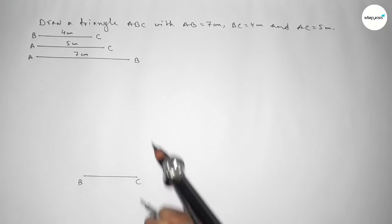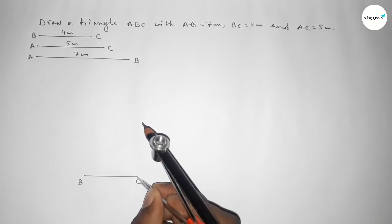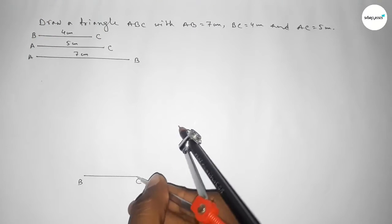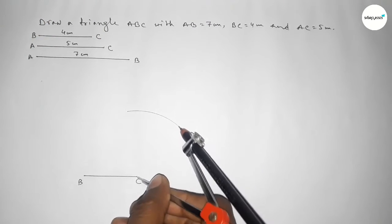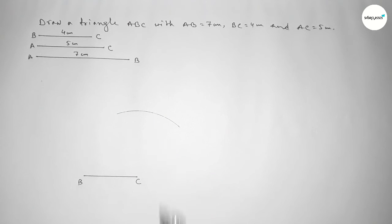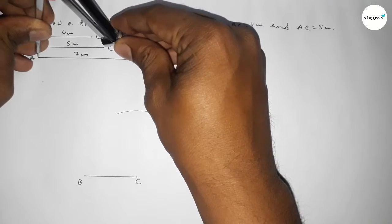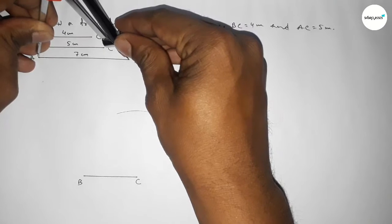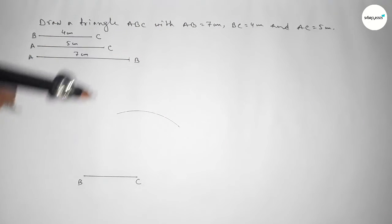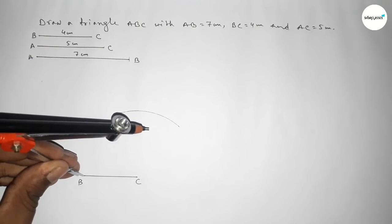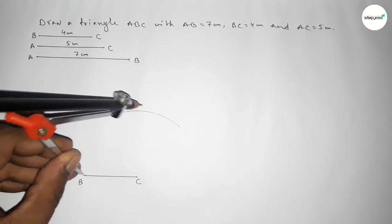Now taking the length AC equal to 5 centimeters using a compass, we place the compass on point C and draw an arc on one side. Then taking the length AB equal to 7 centimeters using the compass, we place the compass on point B and draw another arc.